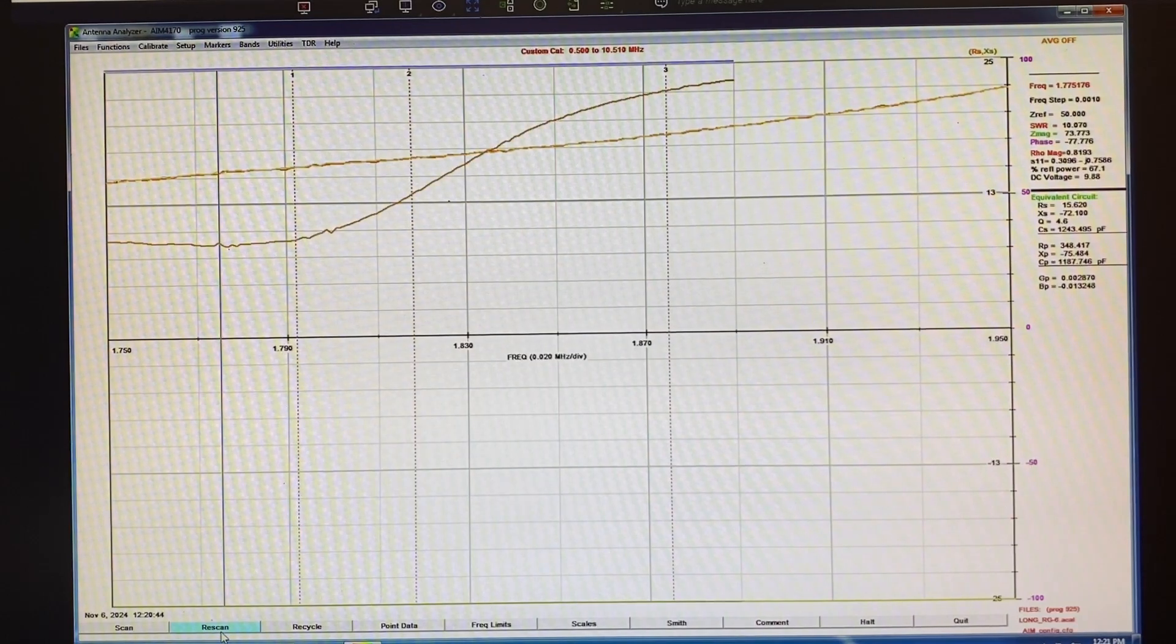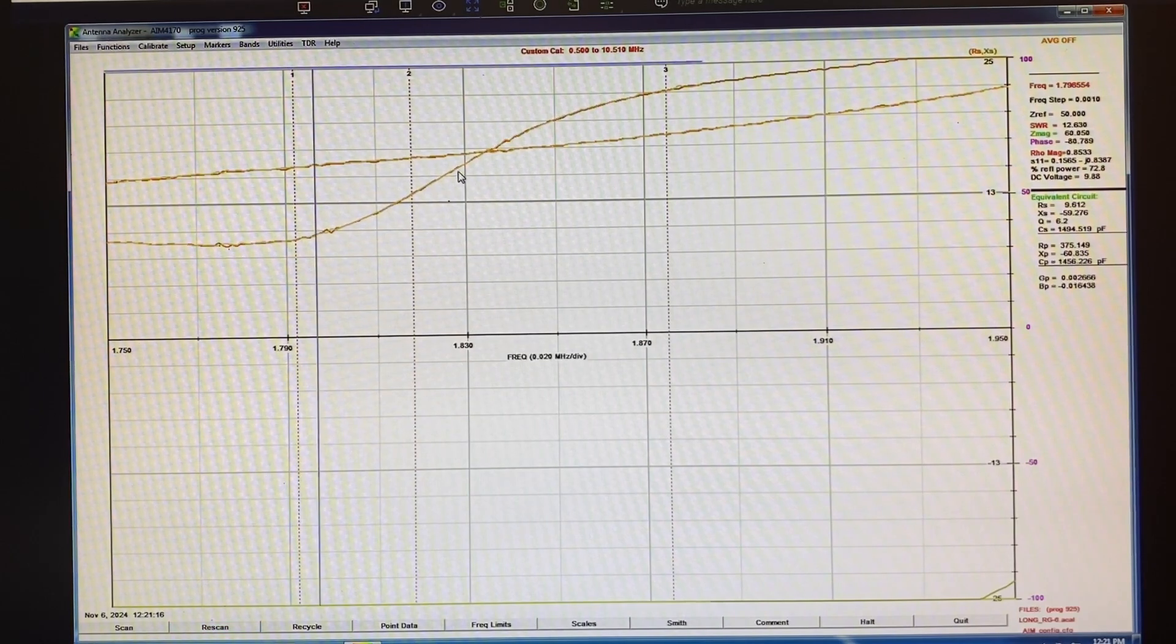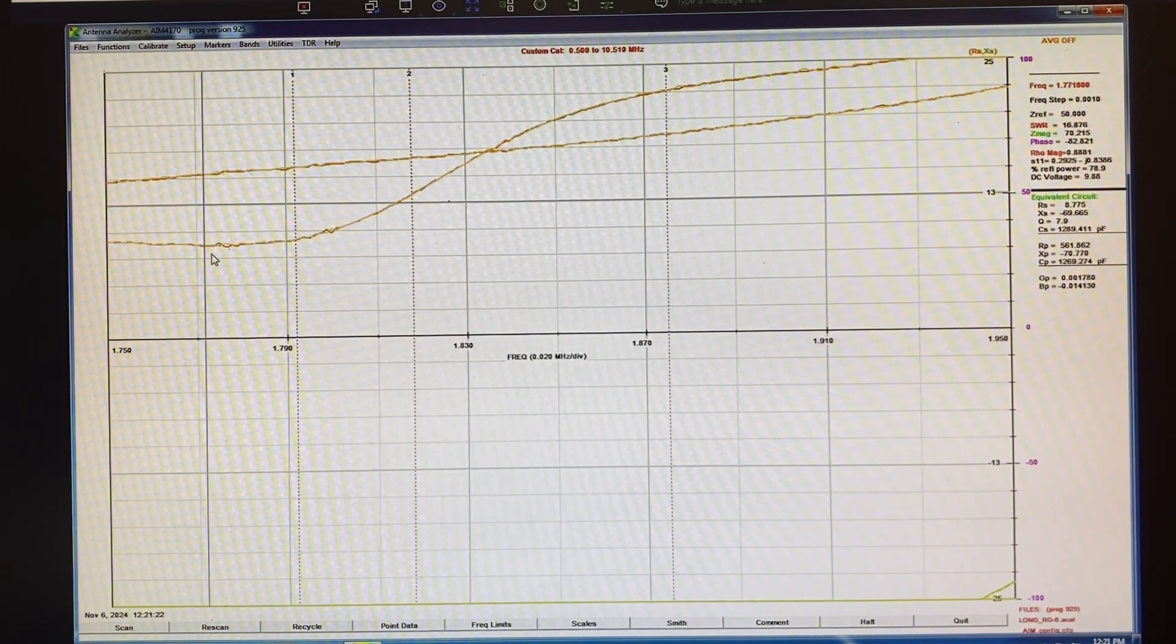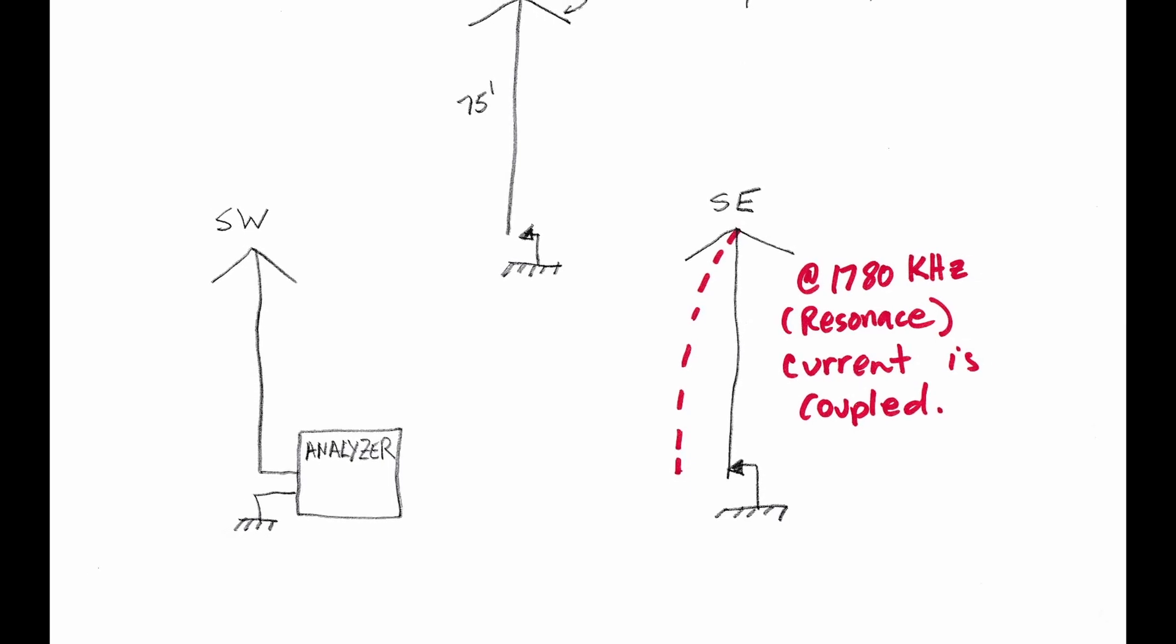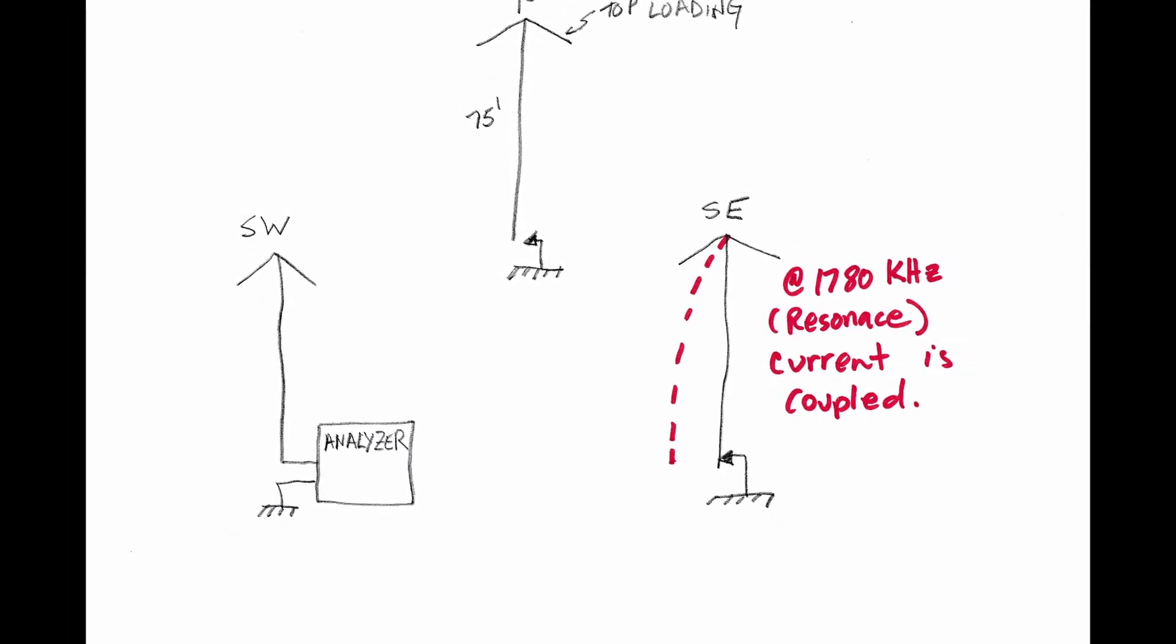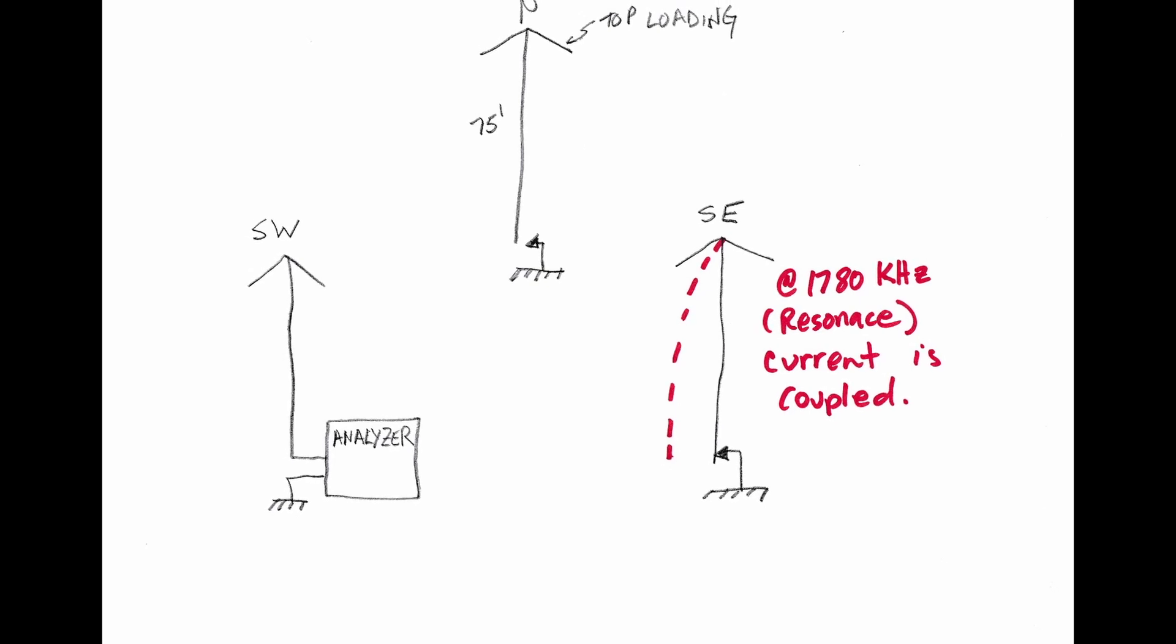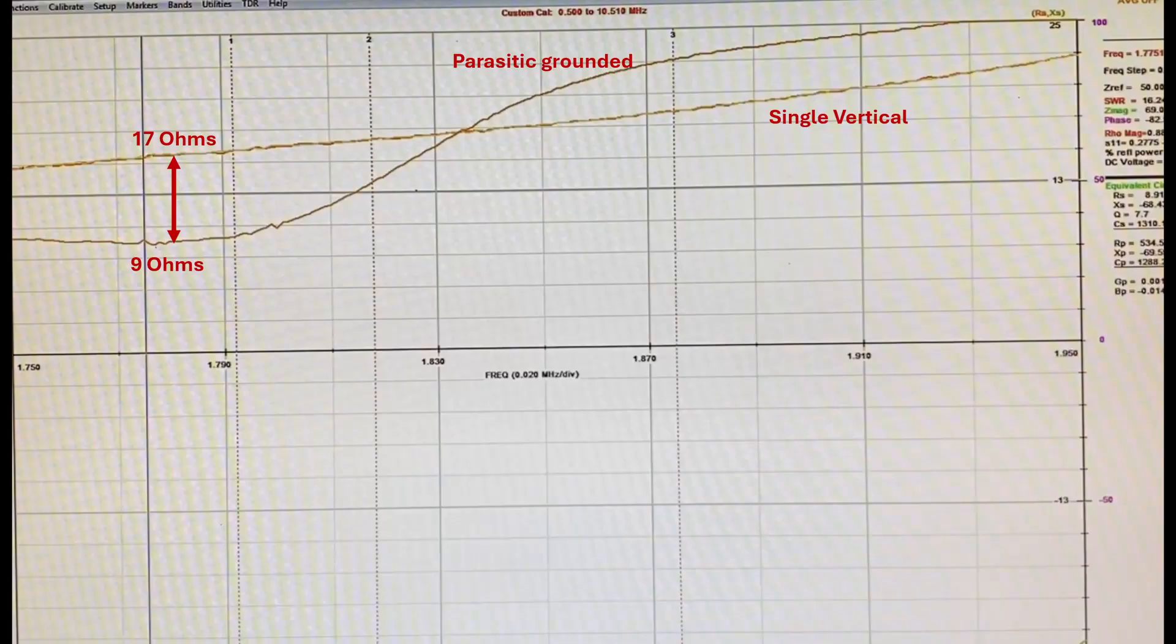All right, now I'm going to ground the southeast vertical. Now please understand, I've changed nothing to the southwest element that we just swept. Everything is the same. All I've done is ground the southeast element, which is about 100 feet away. Now when I sweep, we get this curve. Well, what happened? Suddenly the real resistance has dropped at around 1780 kHz. Why? I mean, what's happened here?